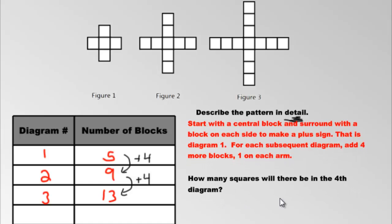How many squares will there be in the fourth diagram? Let's figure that out so we'll write four over here. Come on Mr. M are you kidding me, just add four more? Yeah that's it, you get 13 then add four more you get 17.